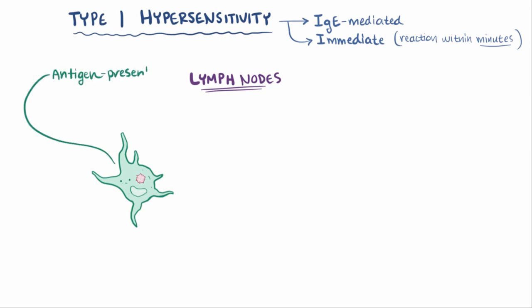These cells are antigen-presenting cells, since they carry the antigen to the lymph nodes and present it to the T helper cells living there. Dendritic cells and macrophages are examples of antigen-presenting cells.